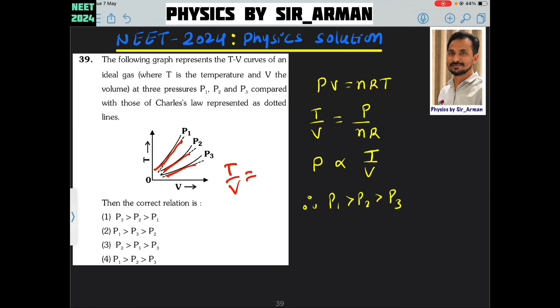When bringing V to the other side, we are remaining with P by nR because nR will go there. So it will be P by nR. Now, n is constant and R is constant, so we can say P is directly proportional to the T by V slope. This means the highest slope for T by V has the highest pressure.